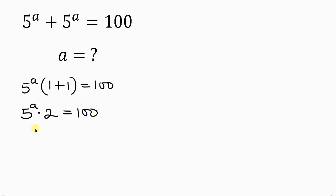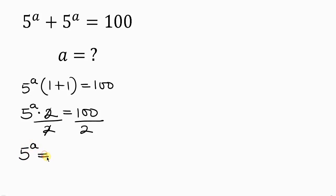Our next step is to divide both sides by 2. So dividing the left hand side by 2 and the right hand side by 2, the 2 cancels out leaving behind 5 to the power of a on the left hand side, equal to 100 divided by 2, which is 50.